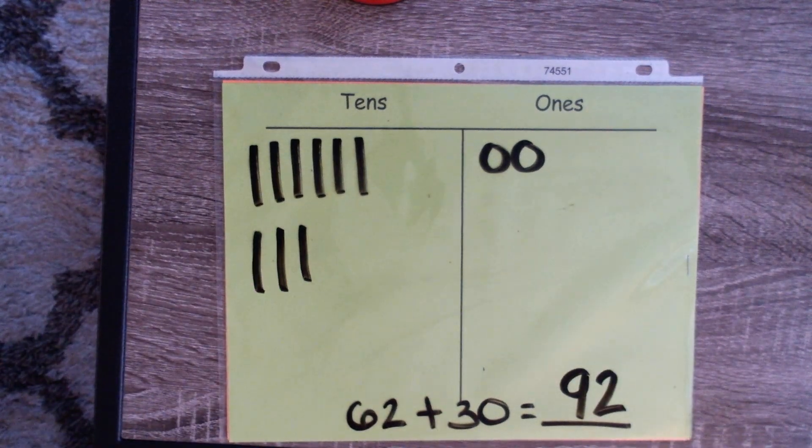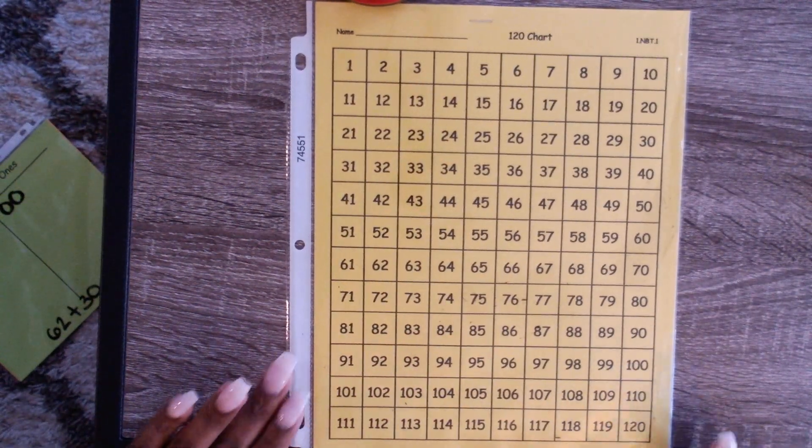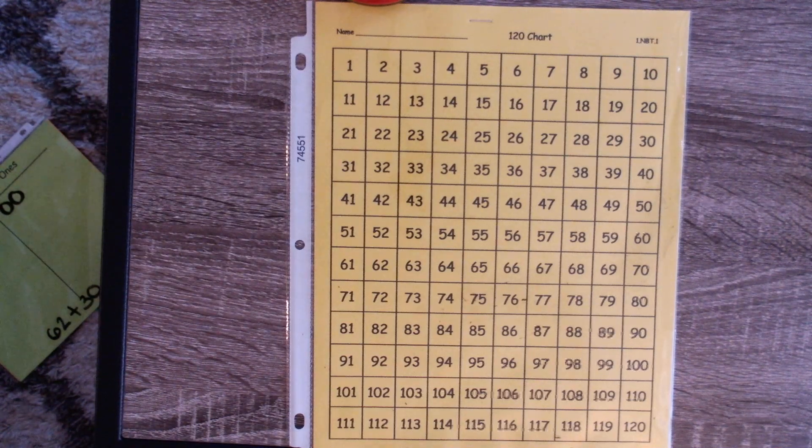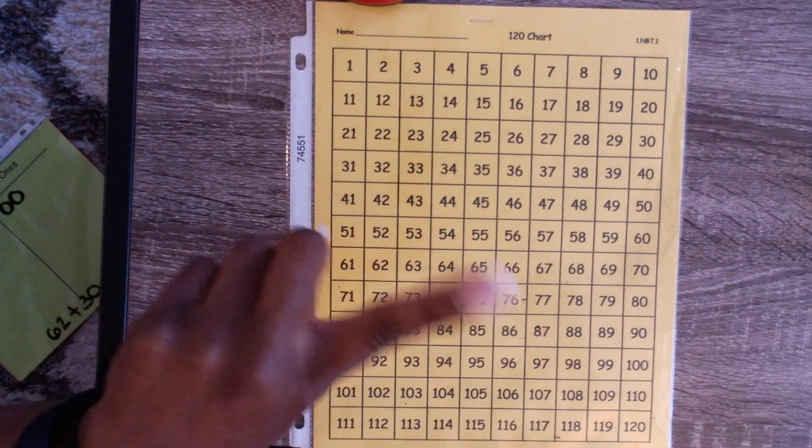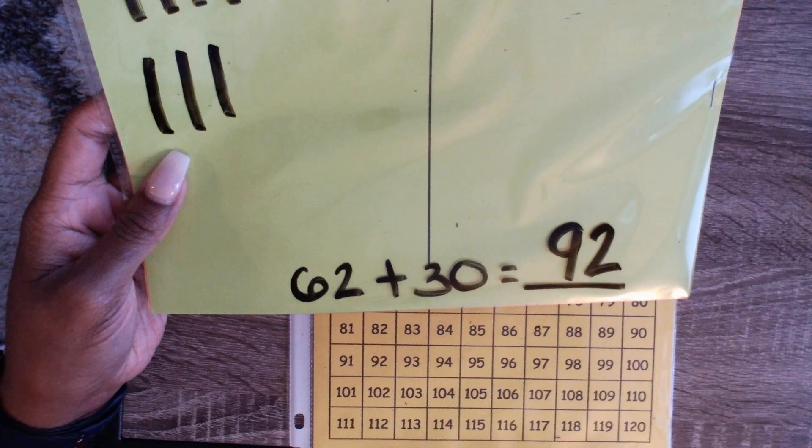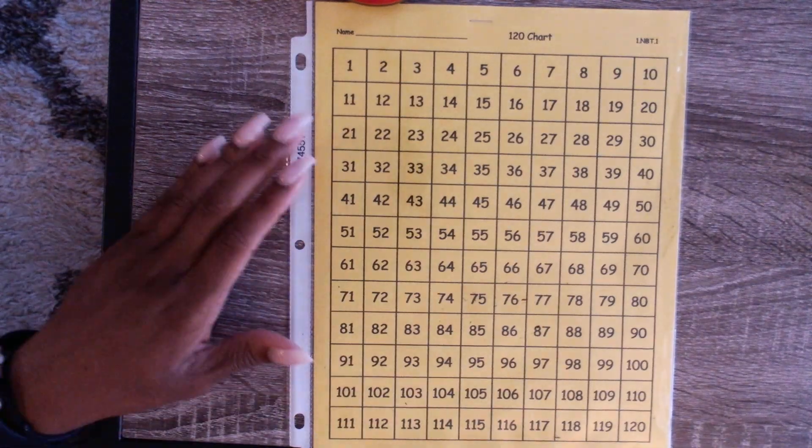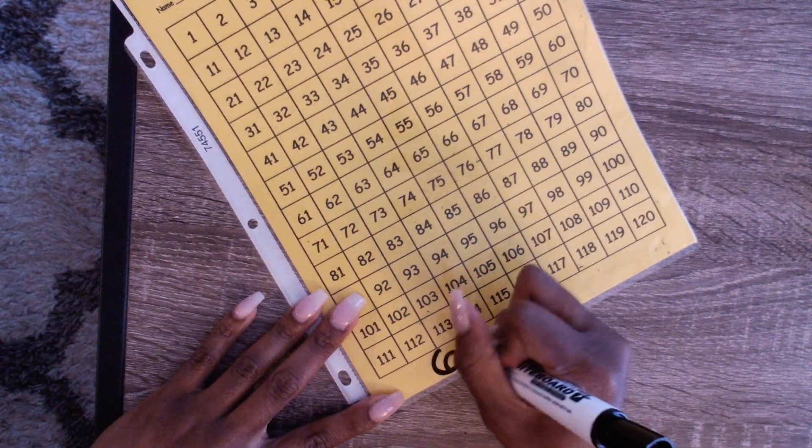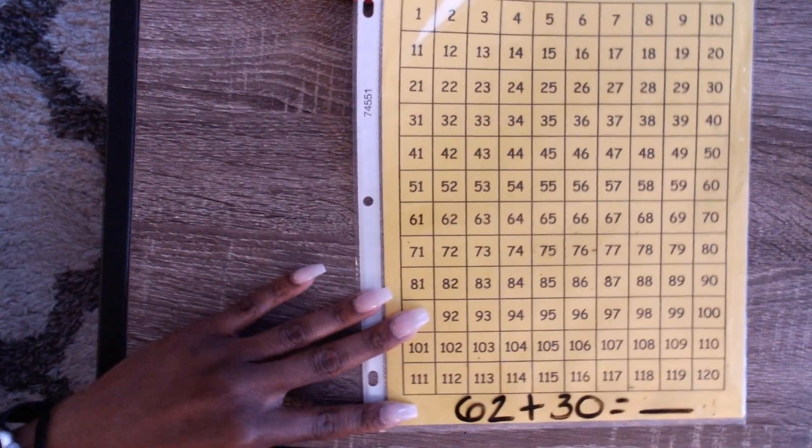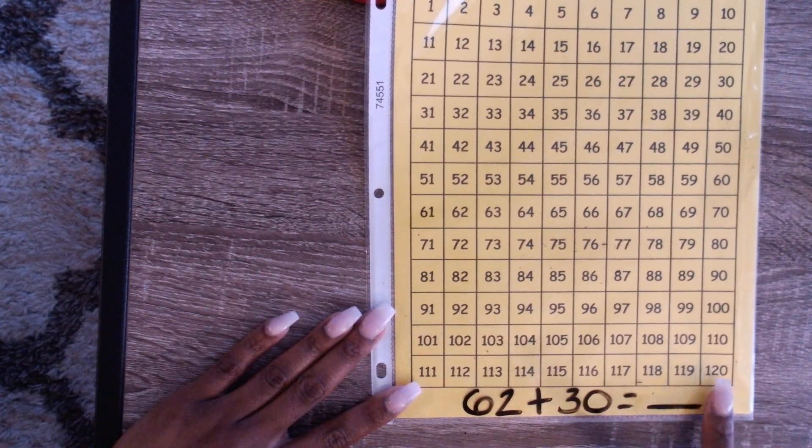Good job, guys. Now I'm going to slide this out of the way. I'm going to teach you a second strategy, and the second strategy involves using a 120s chart. Super easy. This one is a fan favorite because they like to get lazy and don't have to show much work. Our previous equation, we'll go back to that one: 62 plus 30. I'm going to write that equation at the bottom: 62 plus 30 equals blank.